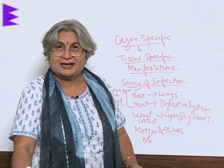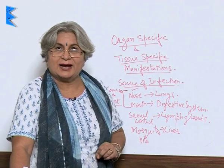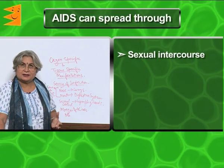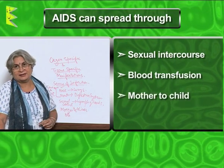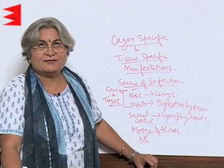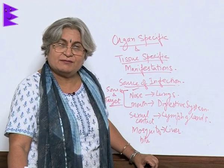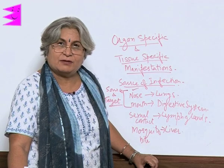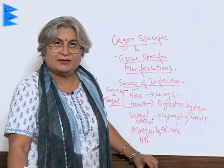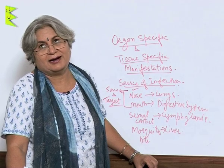In some cases, interestingly, the source and target are different. For example, the AIDS virus can spread through sexual contact, blood transfusion, or from mother to child — but it affects the lymphatic glands and the immune system. Similarly, in the case of malaria, the source is a mosquito bite and the first point is blood, but it ultimately reaches the liver. So this is the story of source and target being different.